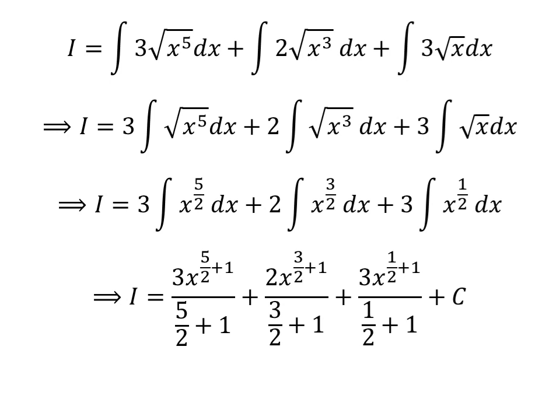So I is equal to 3 times x raised to the power of 5/2 plus 1, divided by 5/2 plus 1, plus 2 times x raised to the power of 3/2 plus 1, divided by 3/2 plus 1, plus 3 times x raised to the power of 1/2 plus 1, divided by 1/2 plus 1, plus capital C. Capital C is the arbitrary constant of the indefinite integral — never forget to add this constant.